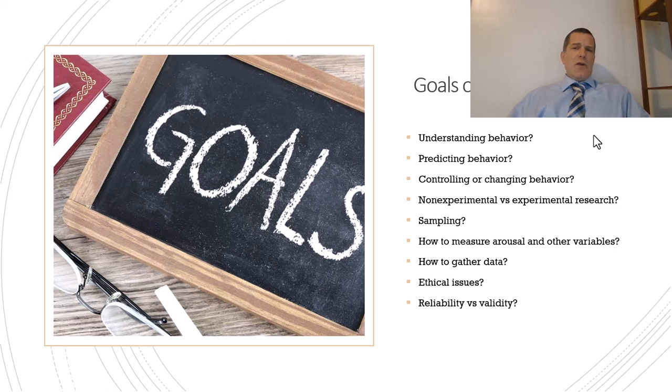How do we go about studying it? Your book's going to introduce non-experimental versus experimental research and also quantitative versus qualitative research. We're also going to focus on things like how do we sample populations to be able to get at our goals? How do we operationalize and measure variables? How do we gather data? What are the ethical issues concerned with studying sexuality?